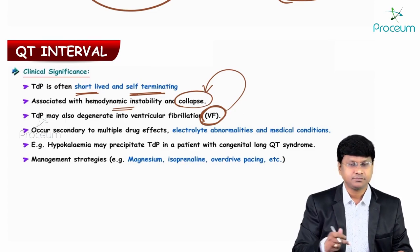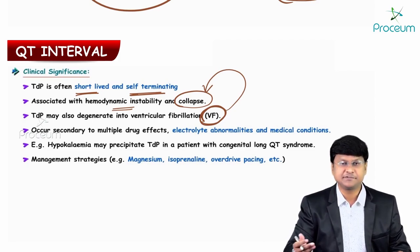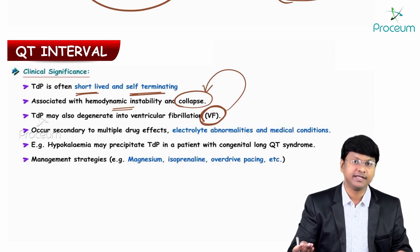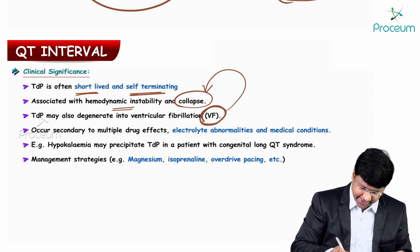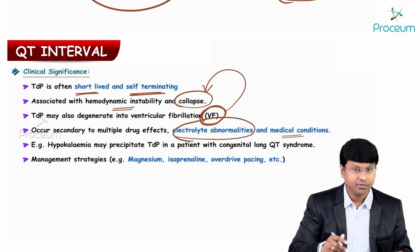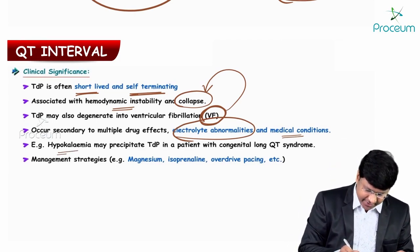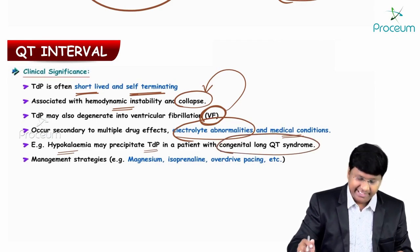The secondary causes of torsades de pointes include mainly electrolyte abnormalities — hypomagnesemia, hypokalemia, and hypocalcemia. In all these conditions there is a prolonged QT interval. Additionally, medical conditions such as hypokalemia may precipitate torsades de pointes in a patient with congenital long QT syndrome.